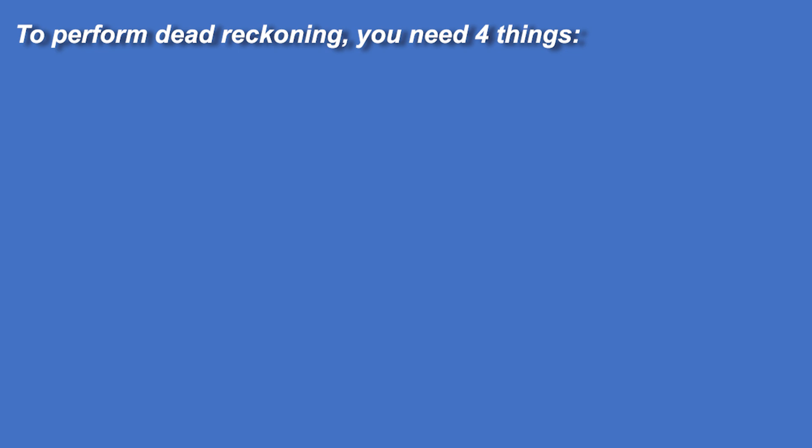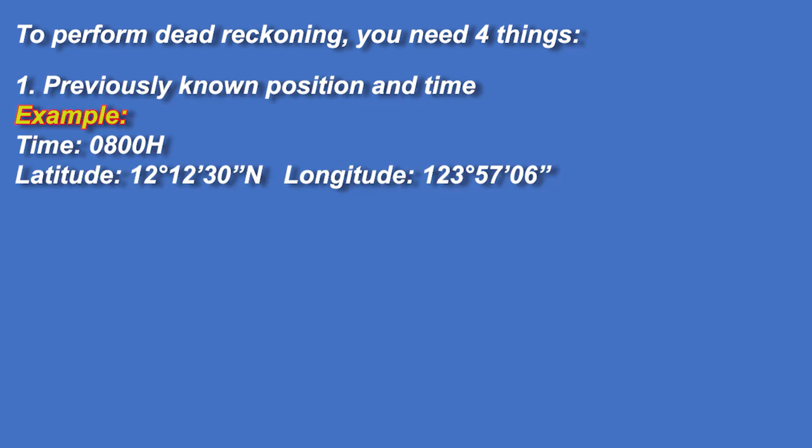To perform dead reckoning, you need four things. Number one: previously known position and time. This is your starting point or last known position marked with the exact time — the reference from which all DR calculations begin. Number two: course. The direction your vessel is heading, measured in degrees true, usually from the gyro compass.